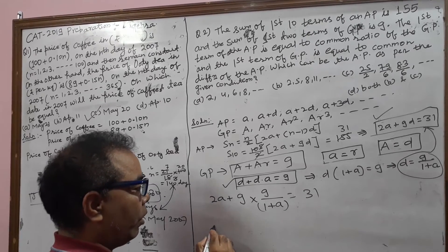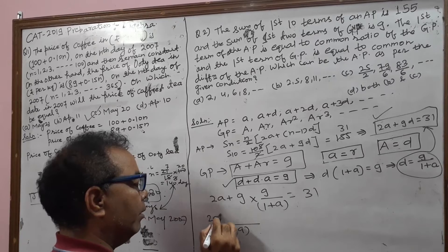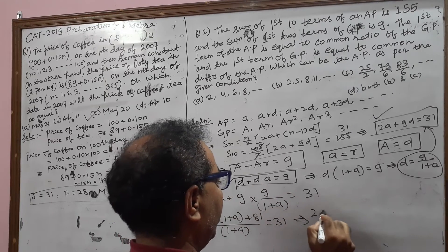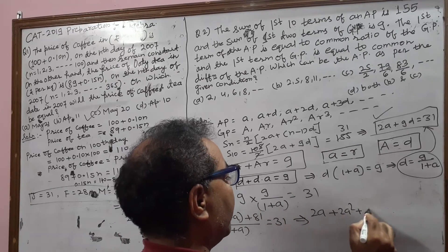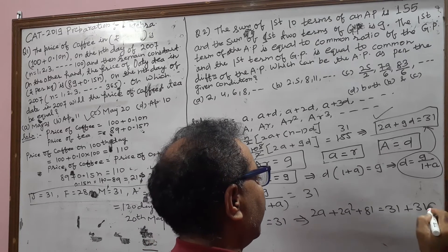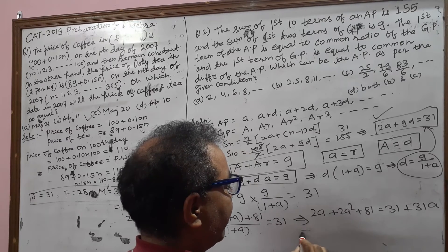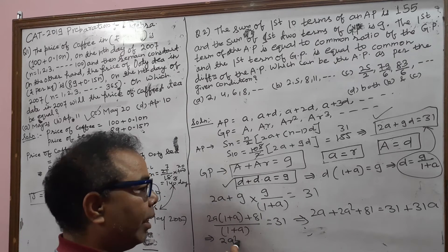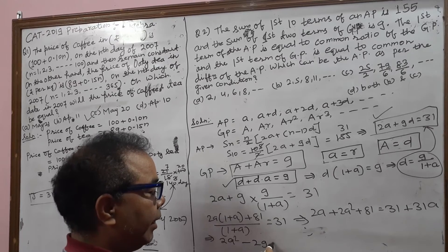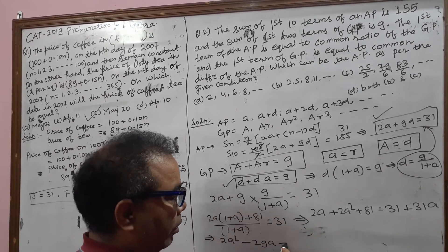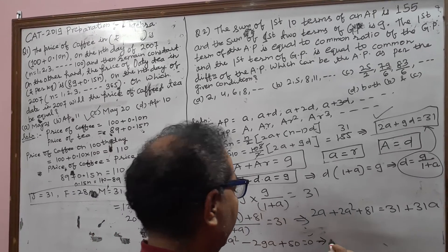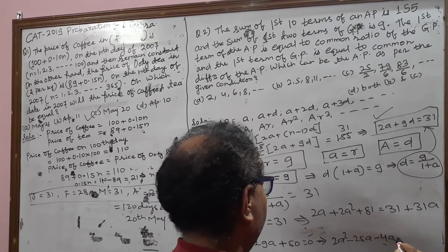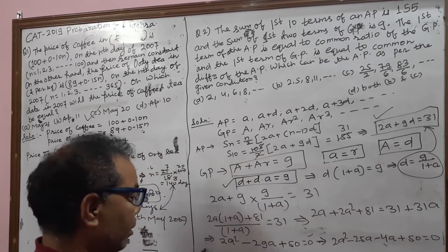Substituting d = 9/(1 + a) into 2a + 9d = 31: 2a + 9 × [9/(1 + a)] = 31. Multiplying through by (1 + a): 2a(1 + a) + 81 = 31(1 + a). This gives 2a + 2a² + 81 = 31 + 31a, so 2a² − 29a + 50 = 0.